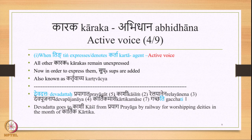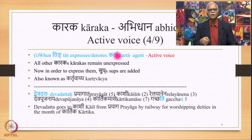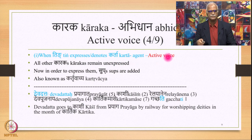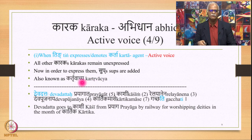Here are the three constructions available in Sanskrit: active voice, passive voice, and impersonal construction. In the active voice — the first construction — when Ting expresses or denotes Kartha or agent, this is called active voice. All other Karakas then remain unexpressed; in order to express them, Supes are added after the Pratipadikas. This active voice is also known as Kartruvachya in Sanskrit, where Kartha is the meaning of Ting.